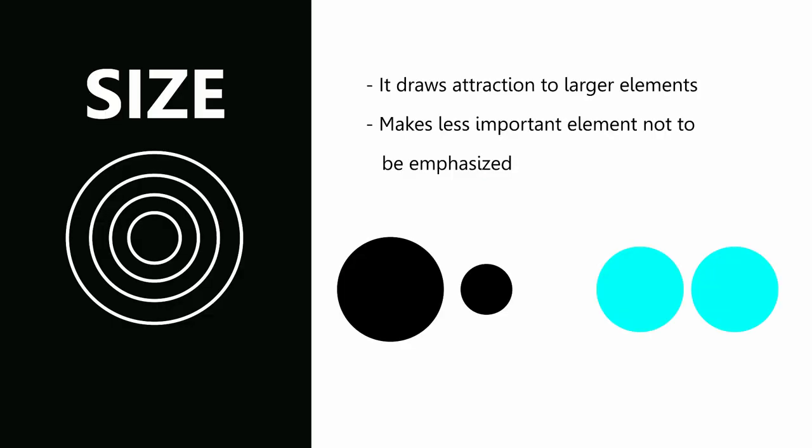The next element is size, also known as scale or mass. Size is related to other elements. It draws attention to large elements and makes less important elements less emphasized. It helps us to achieve good visual hierarchy. For example, the circle on the right is bigger than the circle on the left, while in the other example the circles are the same size. This helps us understand that bigger elements look more important than smaller elements. Ensure that you arrange information in your design according to its importance.